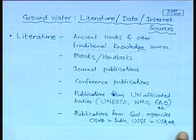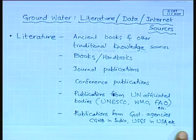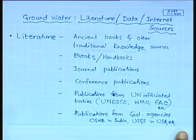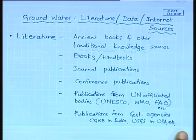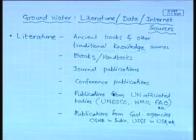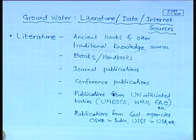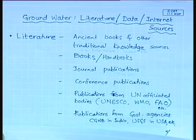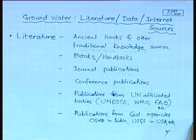Next are publications from government agencies. Governments in developed countries such as the USA, many European countries, Japan, the former Soviet Union, the present Russia, the Council of Independent States, as well as the Central Groundwater Board in India — their publications may be in the form of handouts, books, maps, tables, charts, or predictions, and all of these constitute an important form of literature pertaining to groundwater.